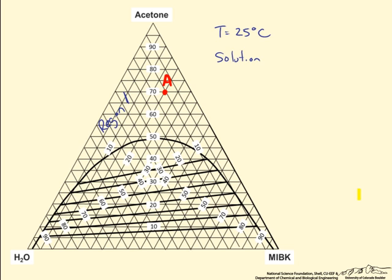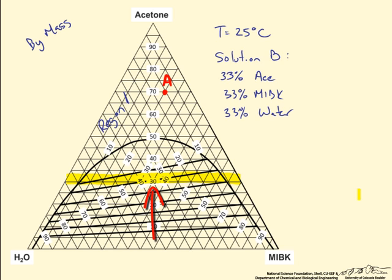Let's make a solution that falls under the envelope. Solution B is 33% acetone, 33% MIBK, and 33% water by mass—an equal mass ratio of all three species. Looking at the lines, 33% falls somewhere above the 30 line for acetone, along the 30 line for MIBK, and in front of the 30 line for water. This falls exactly dead center of the triangle, so we'll draw it right there.